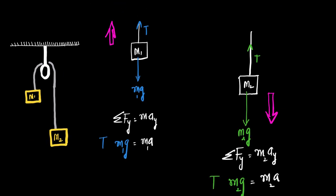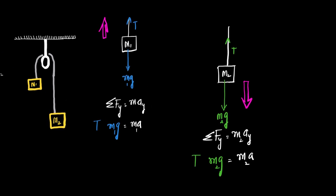Now I draw the free body diagram of both figures. Assuming m2 is heavier, m2 will come down and m1 will go up. When we consider m1, the net direction of motion is along the positive y-axis since m1 is going up. Forces acting in the direction of motion (upward) are positive, so tension T is positive, and weight is negative since it acts downwards. The first equation we get is: T minus m1·g equals m1·a.